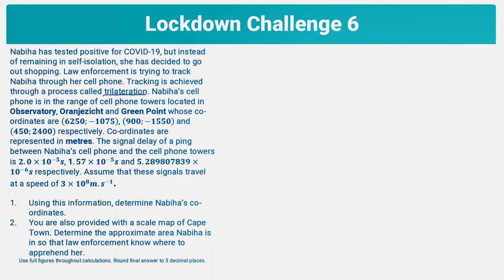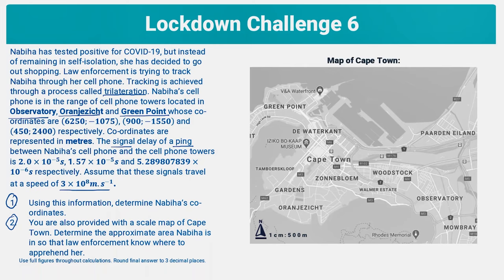We're told that we have three cell phone towers: one in Observatory, one in Urania Zest, and one in Greenpoint. We are also given the coordinates of each of these towers, represented in meters. We are also told the amount of time it takes a signal or ping to reach the cell phone from each of these towers, and we know the speed the signal travels. Using that information, we can calculate the distance between the phone and each tower. There are two main questions; the bonus Python code solution is linked in the description. I'm going to bring up the map of Cape Town and put each of the cell phone towers in their respective locations.